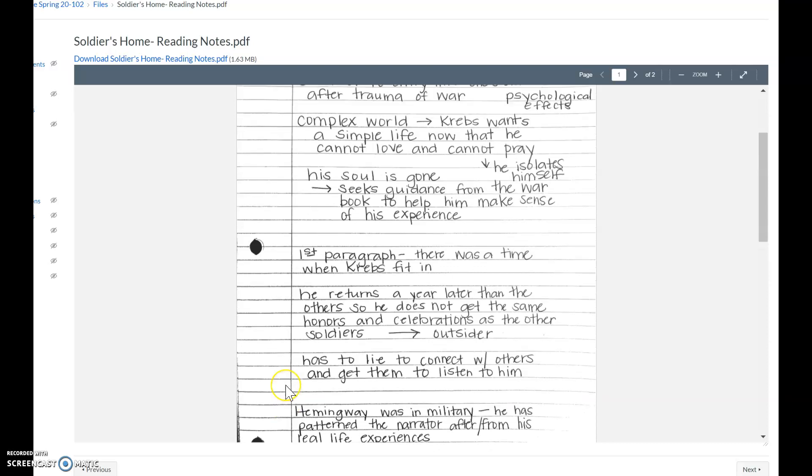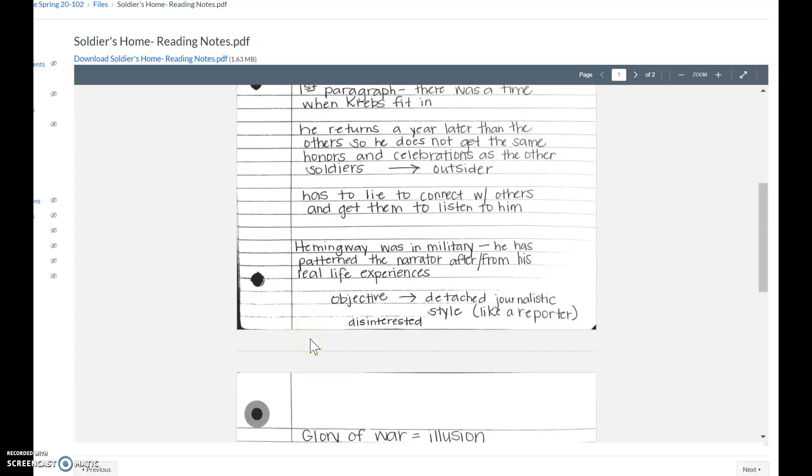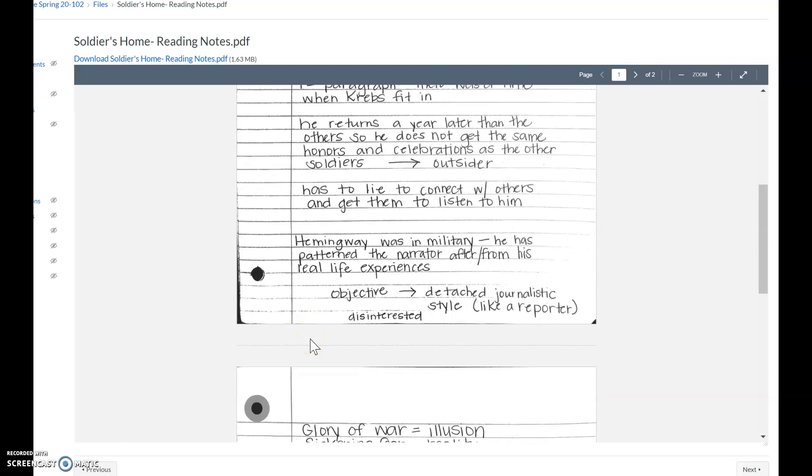And so, that is part of what makes him an outsider. He has to lie to connect with others and get them to listen to him. He lies about his experiences, just trying to get other people to engage with him.